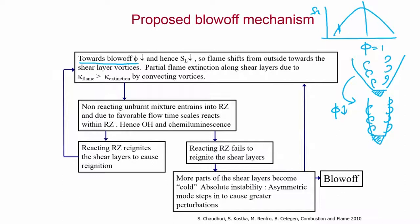As it overlaps the Kelvin-Helmholtz vortices, these vortices can induce much more stretch and this stretch can cause the local flame stretch to exceed the corresponding extinction stretch rate. As a result there can be partial flame extinction along the shear layers. This part is quite clear: as blow-off is approached by reducing equivalence ratio, flame speed reduces; as flame speed reduces the flame shifts from enveloping the Kelvin-Helmholtz vortices to overlapping them. Now the stretch rate of the flame can exceed the extinction stretch rate and partial flame extinction can happen.